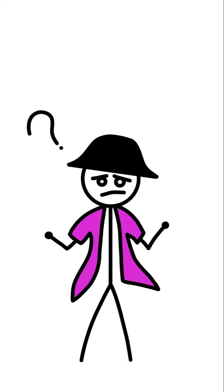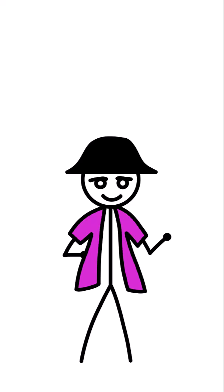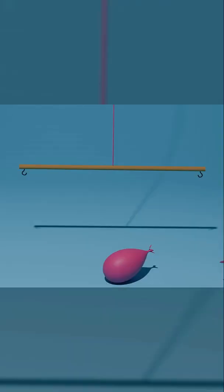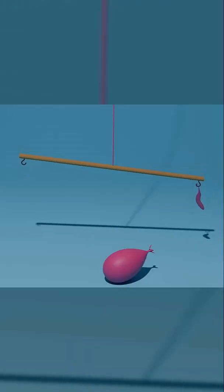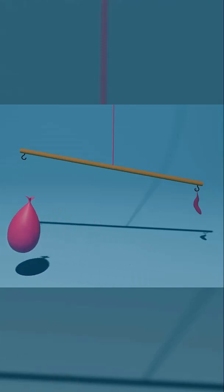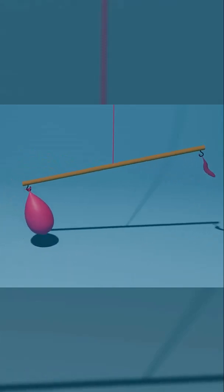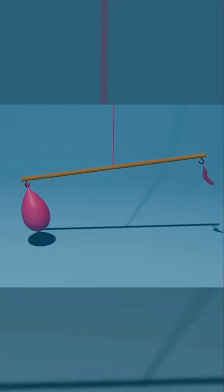Now how do we know gases have mass? We can figure it out using the same balloon. When you place an unblown balloon on one side of a meter scale and a blown one on the other side, the scale tilts towards the blown balloon.